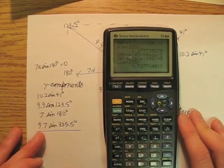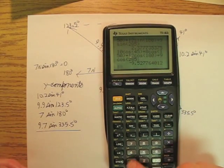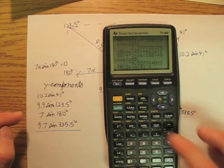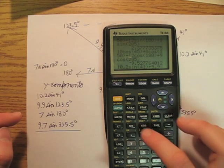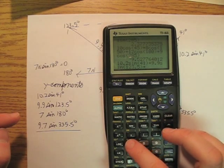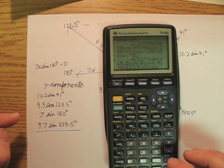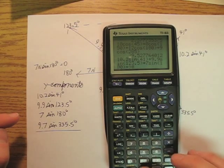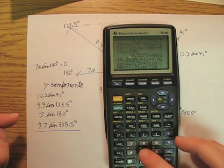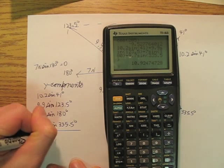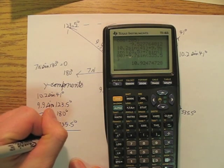I grab my calculator and compute: 10.2 sine 41 plus 9.9 sine 123.5 plus 7 sine 180 plus 9.7 sine 335.5, and I get 10.9 Newtons in the y-direction.